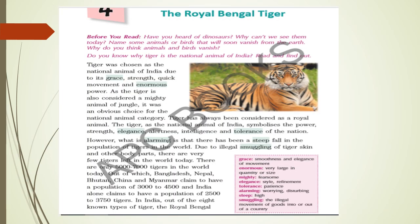Before starting this chapter, I have a few questions for you. Have you heard of dinosaurs? Why can't we see them today? Name some animals or birds that will soon vanish from the earth. Why do you think animals and birds vanish? Because of some natural calamities as well as some human factors.